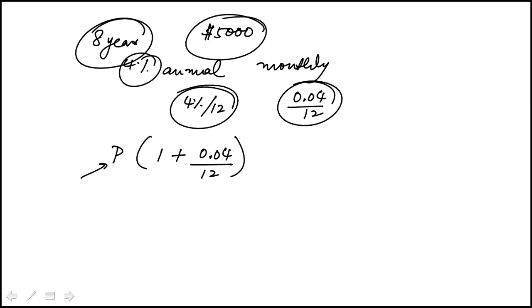Not roughly, actually. It is one-third of a percent, because 4% divided by 12 is one-third of a percent. And that's the increment, meaning it's going to be one hundred and one-third percent of the value at the end of each month.